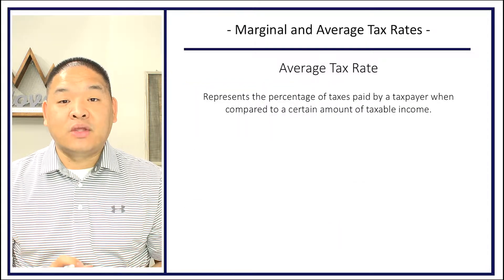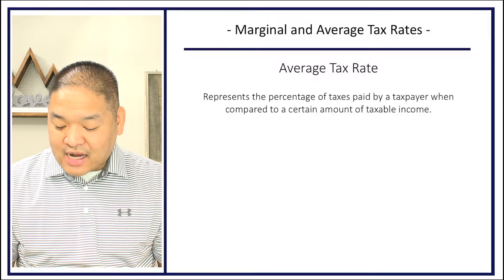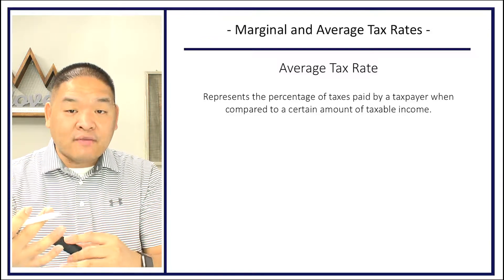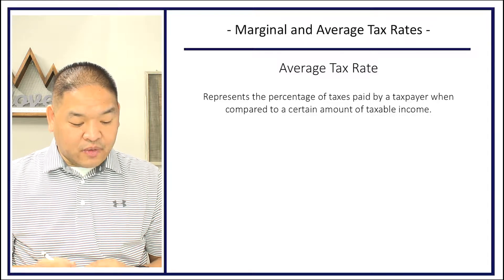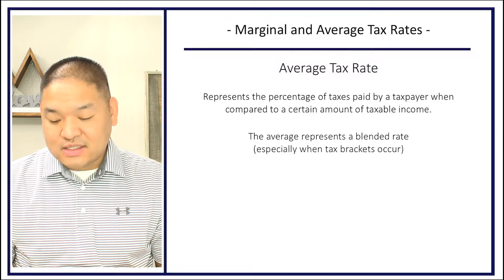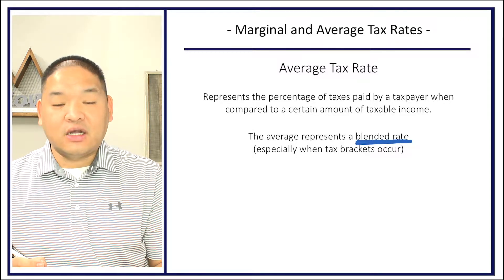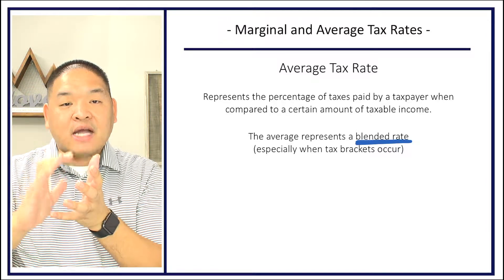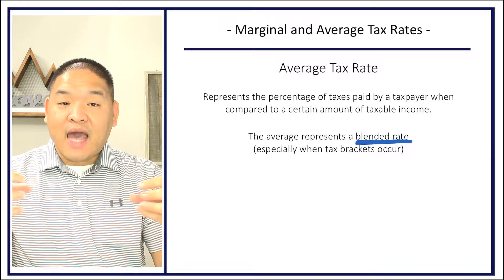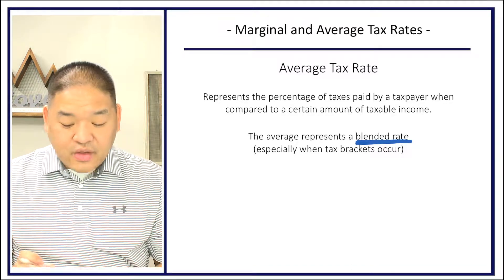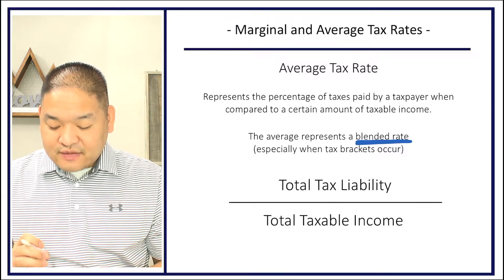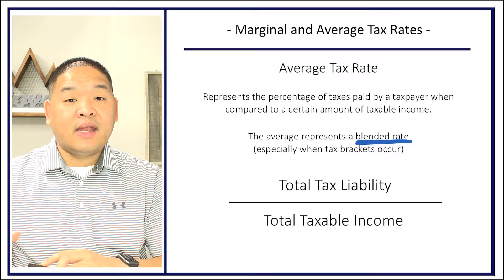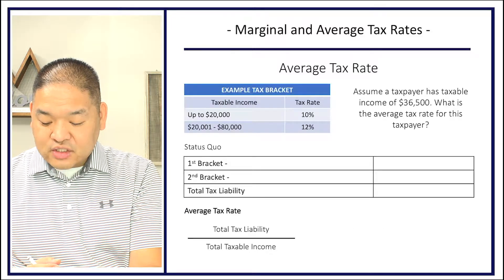Now let's look at the average tax rate. The average tax rate represents the percentage of taxes paid by a taxpayer compared to their total taxable income — it's truly an average. It typically represents a blended rate when multiple tax brackets are involved. The formula is simply: total tax liability divided by total taxable income.